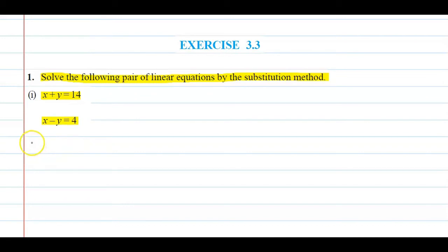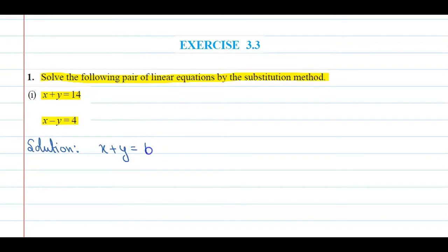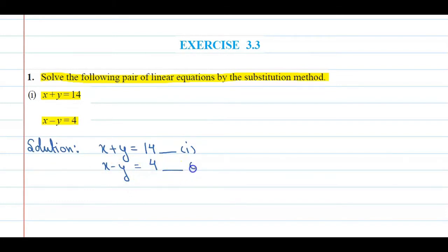सबसे पहले हम solution लिखते हैं और जो equations हमें दी गई हैं उनको हम label करते हैं. So x plus y equal to 14 — say this is equation number 1. Second equation is x minus y equal to 4 — this is equation number 2.